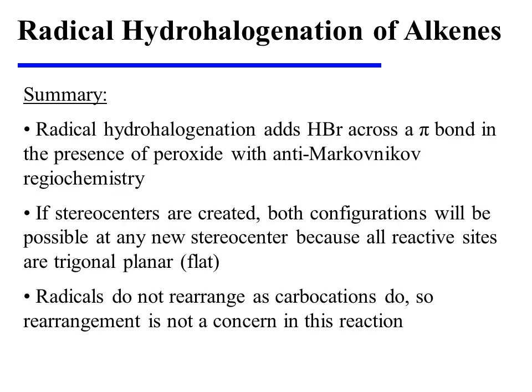In summary, radical hydrohalogenation adds HBr across a pi bond in the presence of peroxide with anti-Markovnikov regiochemistry. If stereocenters are created during the reaction, both configurations will be possible at any new stereocenter because all reactive sites are trigonal planar and addition can occur from above or below. Radicals do not rearrange as carbocations do, so rearrangement is not a concern in this reaction.